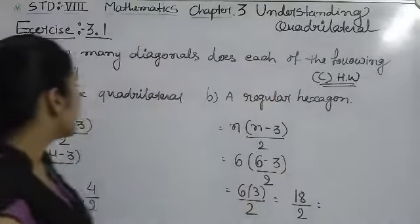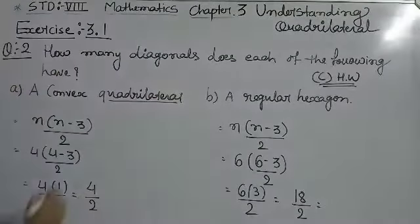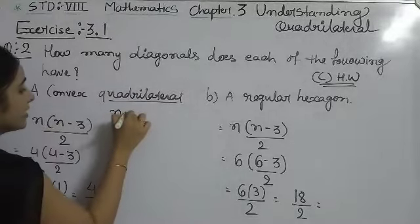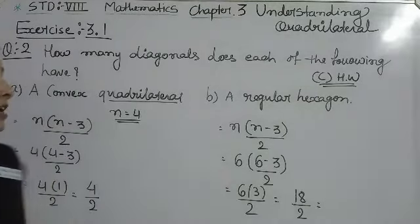First, what is a convex quadrilateral? Quadrilateral means how many sides? Four. So here we have the formula where n equals 4, because quadrilateral has four sides.